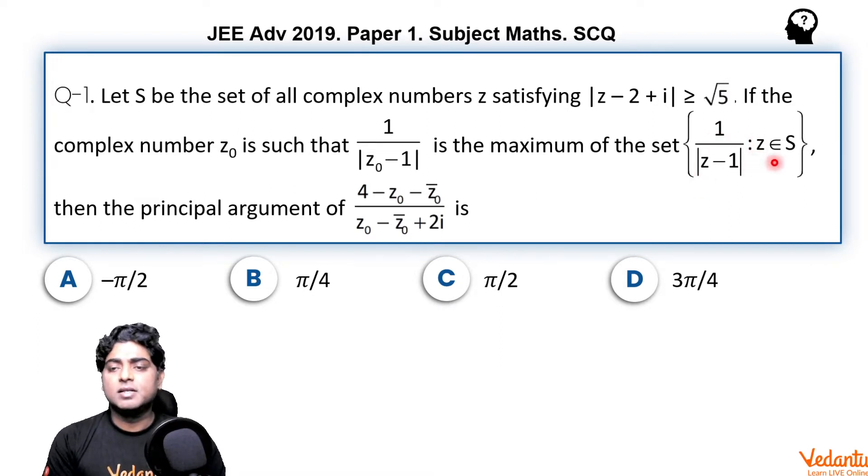1 upon mod of z0 minus 1 is maximum of the set defined as 1 upon mod of z minus 1 such that z belongs to capital S, then the principal argument of 4 minus z0 minus z0 bar upon z0 minus z0 bar plus 2 iota is